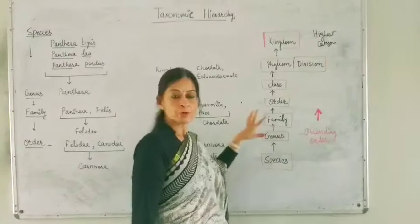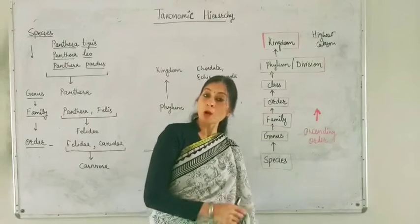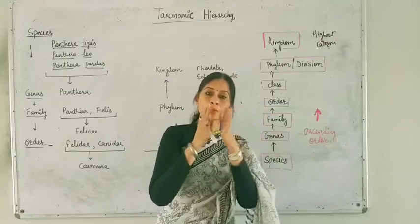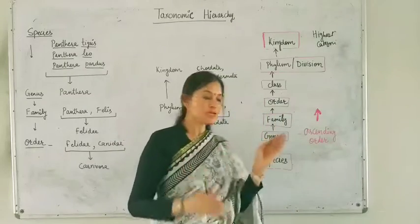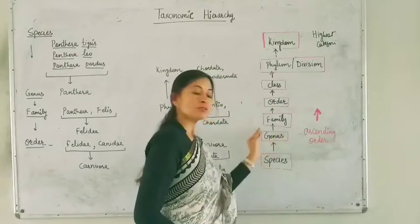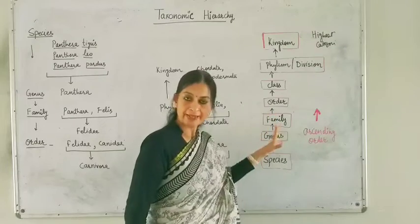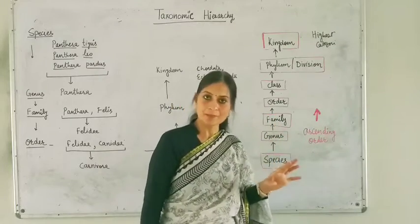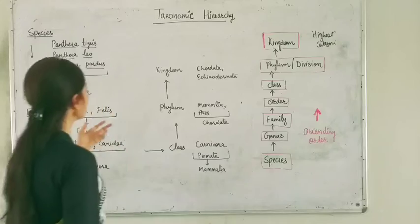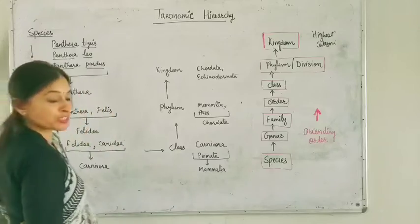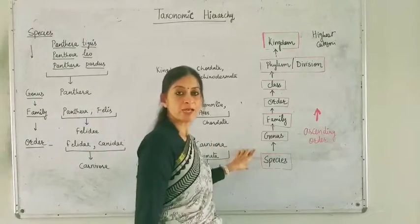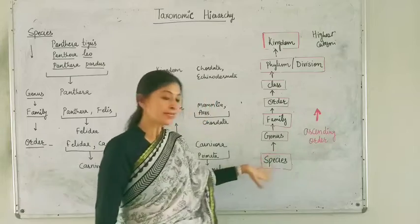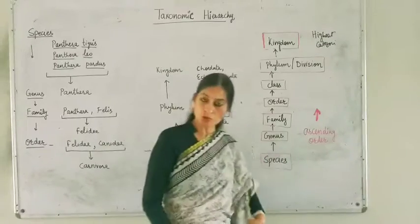Now, how are we going to define them? How are we going to place different organisms in these different types of categories or taxa? First of all, let's define the species. This is the lowest category. In this category, the taxon has the fewest organisms.